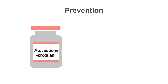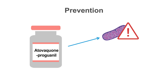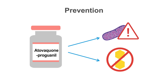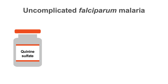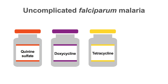The second option is a combination of atovaquone, which is a structural analog of coenzyme Q found in the mitochondria electron transport system, and the sulfa-analog proguanil, which inhibits the protein synthesis of folic acid in the parasite. The third option is quinine sulfate plus doxycycline, tetracycline, or clindamycin.